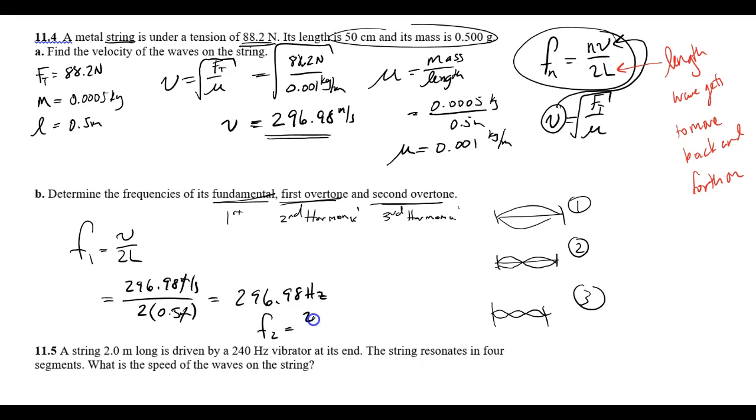Now here's what's cool. F2 is 2V all over 2L, and F3 is 3V all over 2L. But if I look at just this part here, what is V all over 2L? Oh, that is F1. So technically, F2 is simply 2 times the fundamental frequency, the first overtone or the second harmonic.